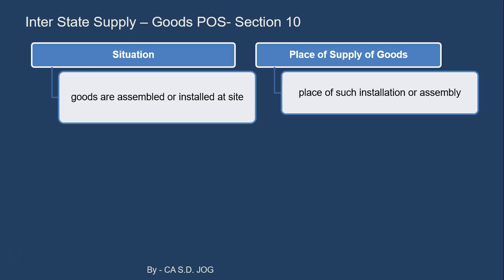Next situation for place of supply of goods: goods are assembled or installed at site. This is very simple and quite logical. Say a machine or a big plant is erected or assembled at site — then what will be the place of supply? The destination finally is that site, the place of such installation or assembly.